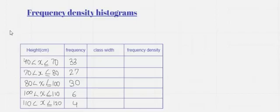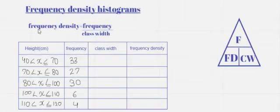The first step is to write down the formula: frequency density equals frequency divided by class width. This can also be summarized using a triangle, in which frequency is at the top and frequency density and class width are at the bottom.